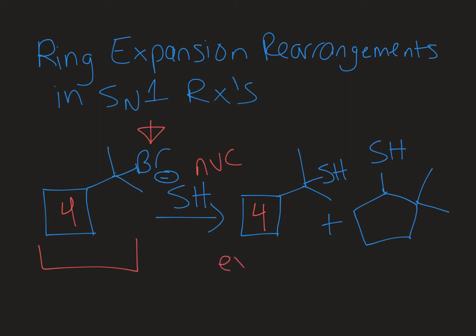This would be the expected product, but then I have this other product where I have a five-membered ring. This one would be an unexpected product, and when you see an unexpected product that tells you that there was some type of rearrangement. In this case my ring has expanded from four members to five members, so this is a ring expansion type rearrangement. We'll take a look at the mechanism for this type of reaction.